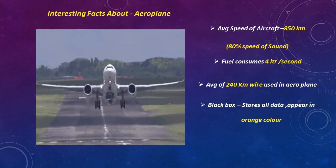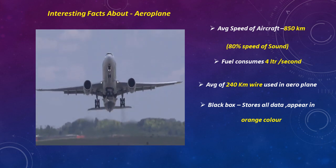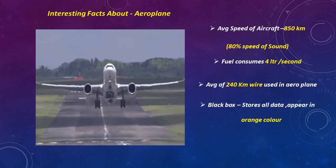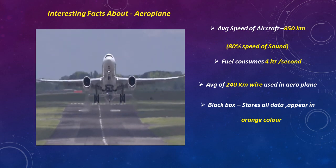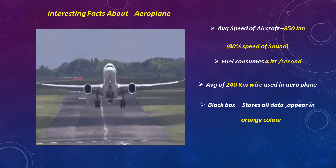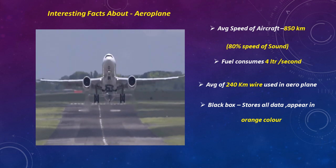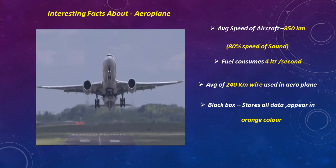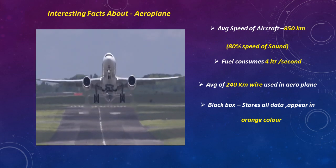You may have heard about the black box whenever an aircraft goes missing or crashes — investigation teams search for it in the news. The black box is a small box that stores all flight data. Despite its name, it is not black — it is actually orange, painted that color for fire resistance so it can be easily found.